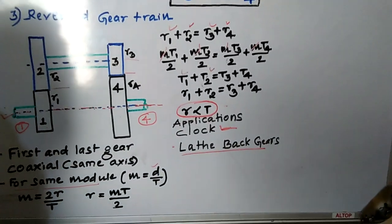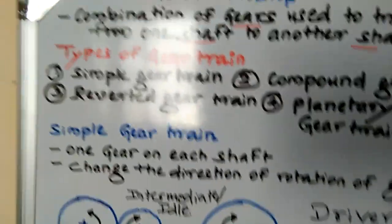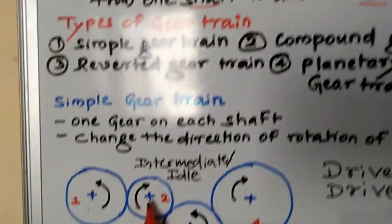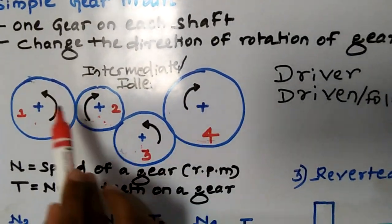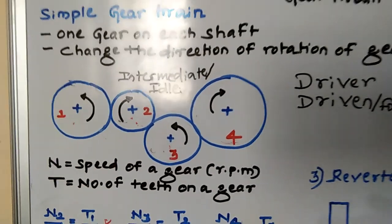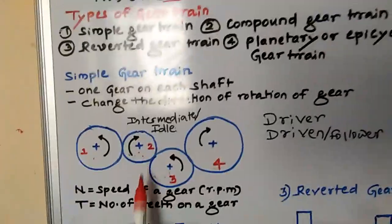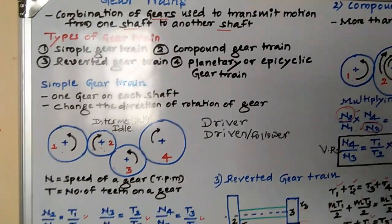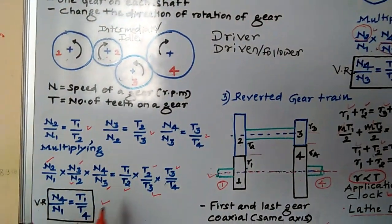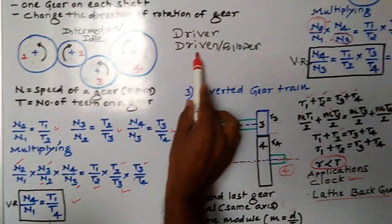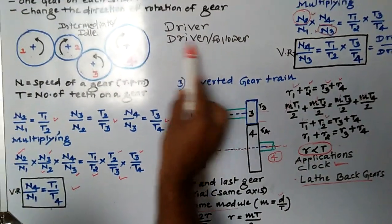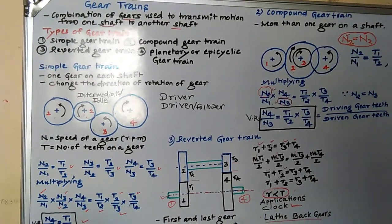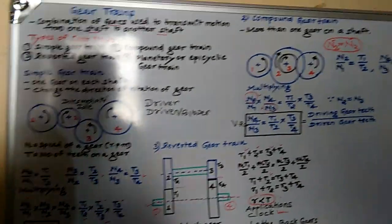I will stop here. In the reverted gear train, gears 2 and 3 are the intermediate idler gears; gear 1 is the driver and gear 4 is the driven (follower). The velocity ratio is denoted as V.R. Thank you.